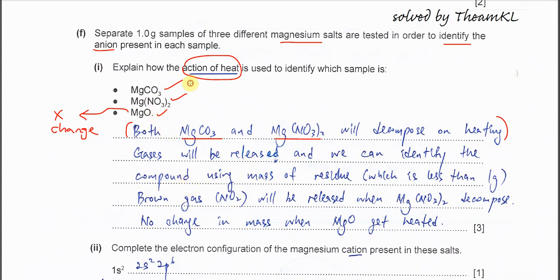Because after heating both, they will form magnesium oxide. Magnesium oxide is the residue. We can compare the mass of the residue with the mass of the carbonate and nitrate used. Compare their ratio and we will know which compound it is. That's why we can use the mass of residue. So again, a gas will be released and we can identify the compound using the mass of residue. And the mass must be less than one gram because the gas is released, so there will be mass loss. We compare the residue, the mass of residue, with the mass of the sample we use. And we will know what the compound is, either carbonate or nitrate.